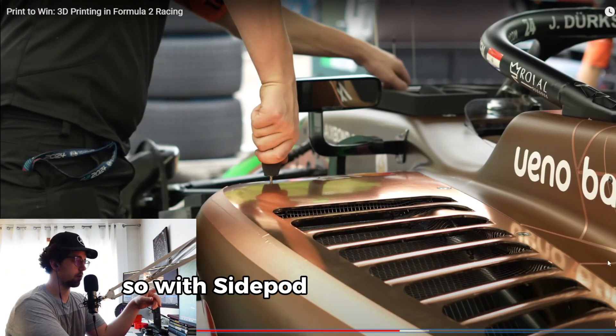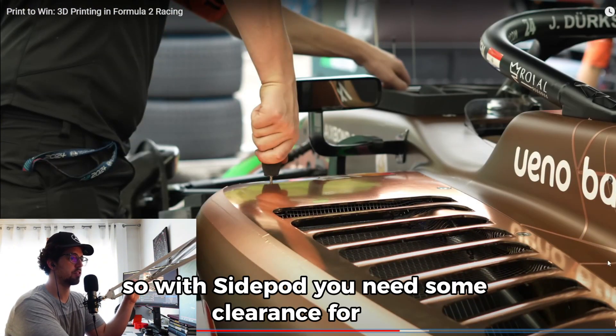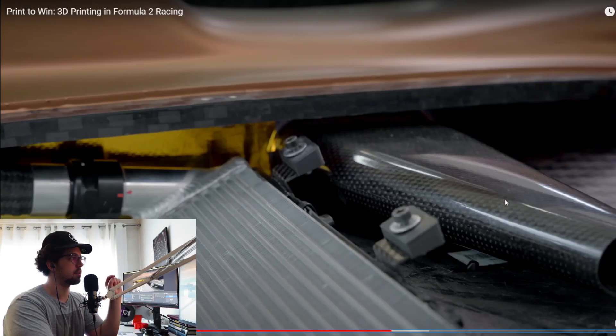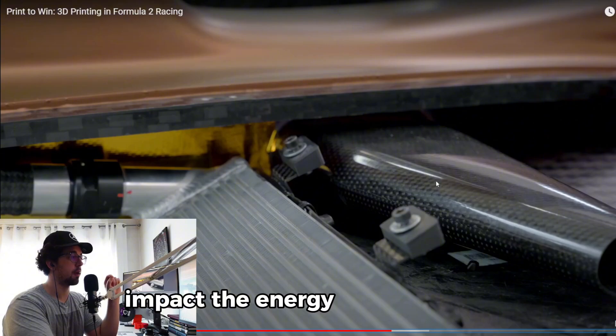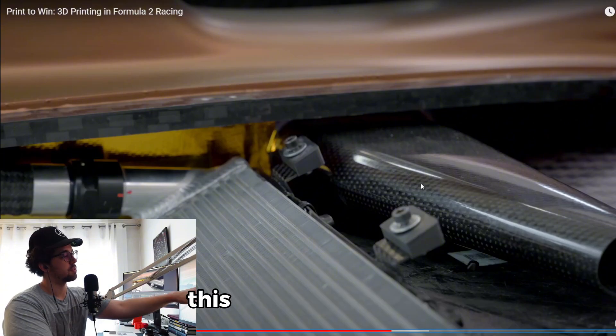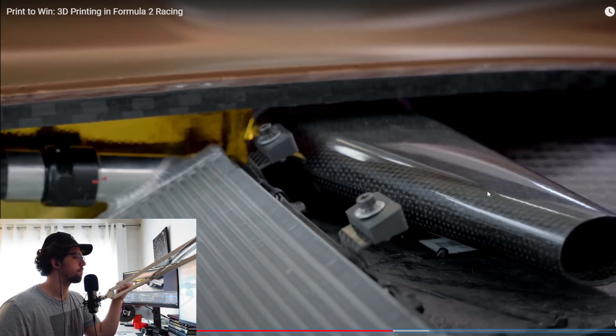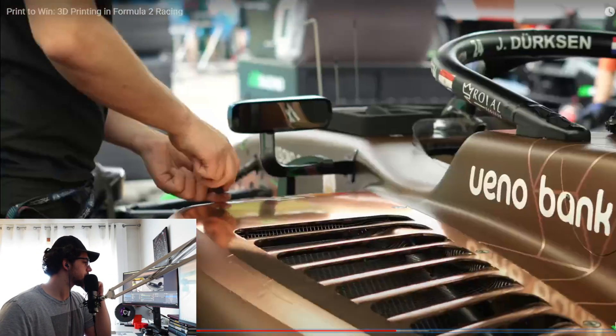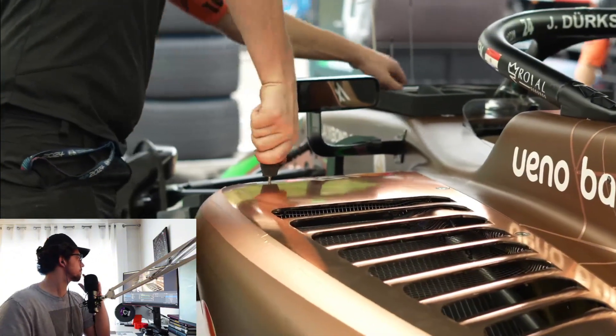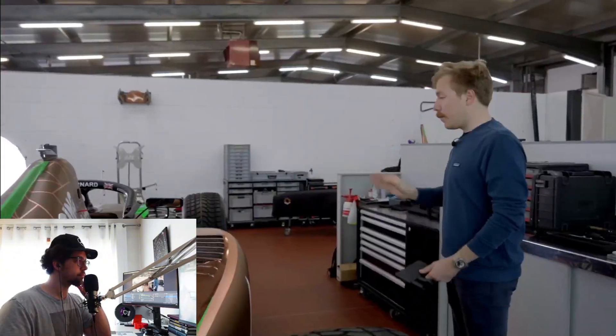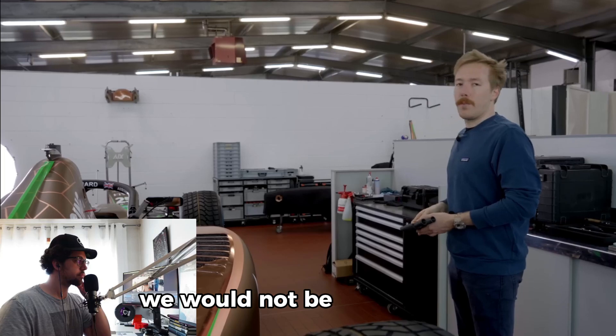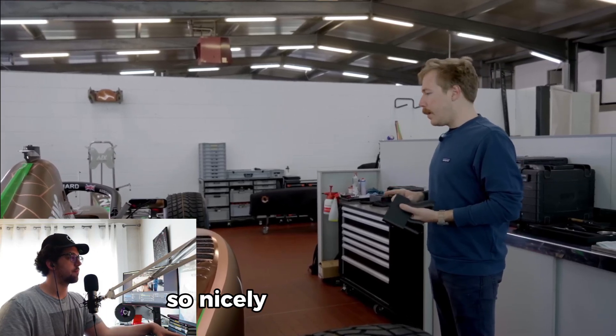So with the side pod, you need some clearance for the cooling to happen. The side structure, so if there is an impact, the energy will dissipate. Pieces right here give you the perfect height. We have to manage the height of it, and to do this, we 3D printed a really simple part, but just without 3D printing we would not be able to do it so nicely and easy to use.